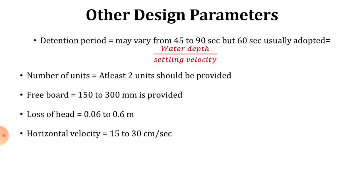Other design parameters include: detention period, which may vary from 45 to 90 seconds but 60 seconds is usually adopted, calculated as water depth divided by settling velocity; number of units — at least 2 units should be provided; freeboard of 150 to 300 mm; loss of head allowed is 0.06 to 0.6 meters; and horizontal velocity should be maintained between 15 to 30 cm/s.